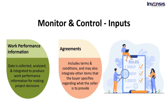The next input to the monitoring and control process is work performance information. Work performance data is an output of the direct and managed project work process in which the data is collected, analyzed, and integrated. This produces work performance information for providing a solid understanding for making project decisions. For example, project managers can use performance information to understand the status of services offered, the implementation status of change requests, and indicate the expected completion time.